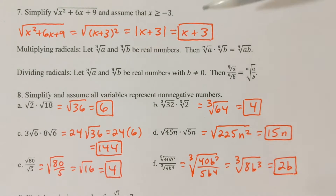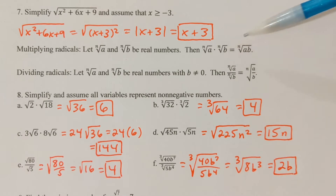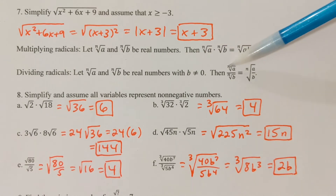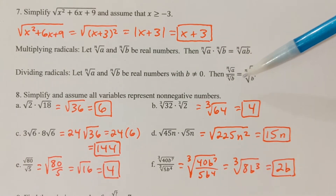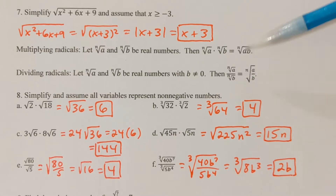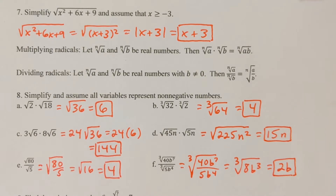When you multiply radicals, as long as the index is the same, you can combine them to a single radical by multiplying the inner terms. Same thing with division — as long as the index is the same, you can combine to a single radical by dividing the inner terms. You can't ever do this if you're adding or subtracting radicals. Only if you're multiplying or dividing can you form a single radical.